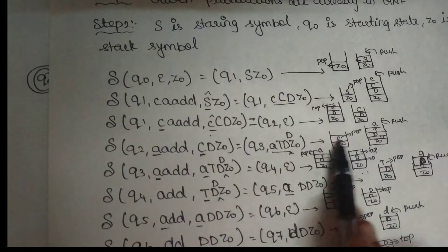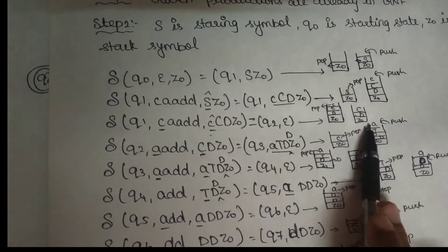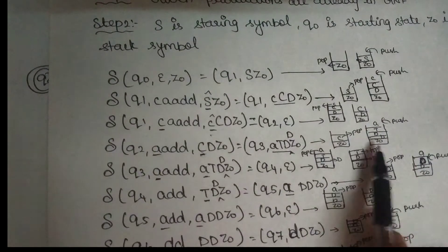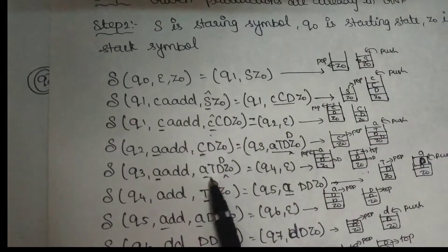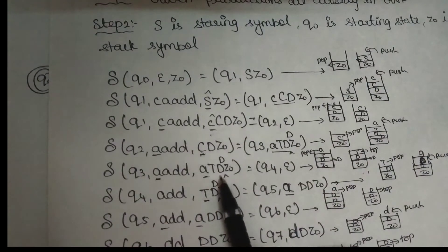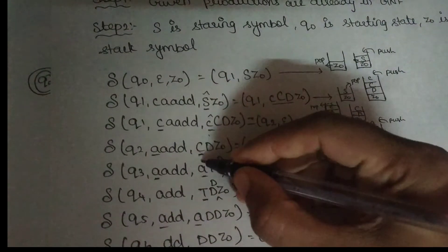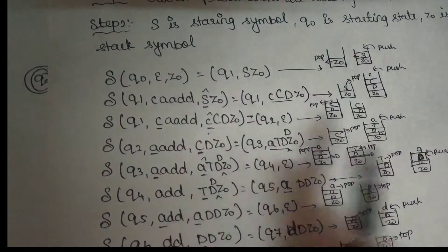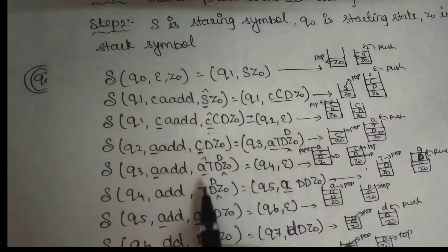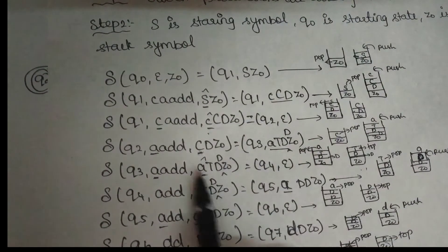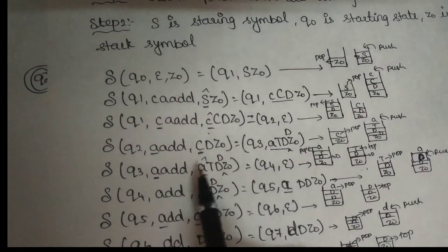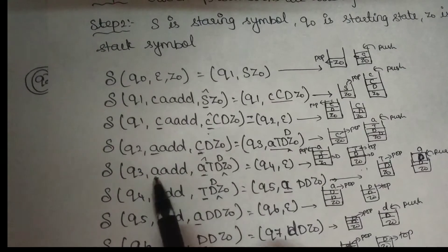Now we are going to verify the top of the stack. We check the terminal. The top of the stack has a terminal, and the input symbol is going to match. We pop. There is T, D, D, Z-naught. We process the input symbol — it is A, D, D. The top of the stack is a capital letter — a non-terminal.